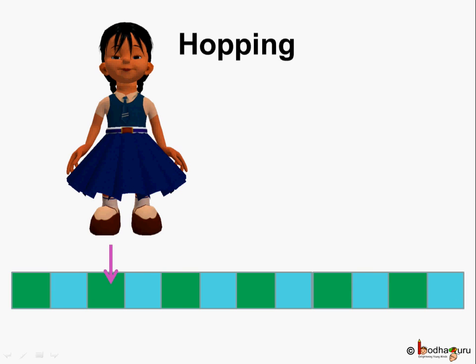Next Khushi hopped. How many squares did Khushi hop? 1, 2, 3. Khushi hopped square number 3.